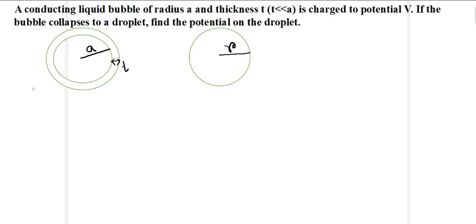The potential of the bubble is V, so we can write V = q / (4πε₀a), where q is the total charge. Now we have to find out the potential of the droplet.